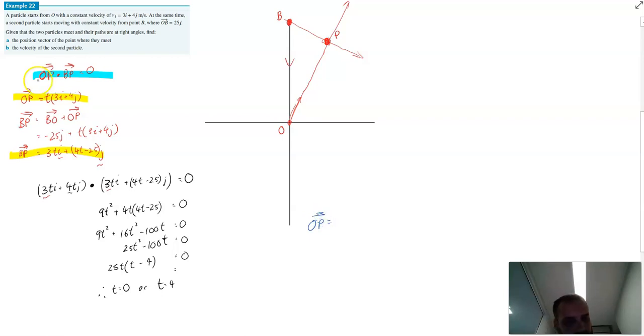OP equals 4 bracket 3i plus 4j. The position vector of where they meet looks like 12i plus 16j.